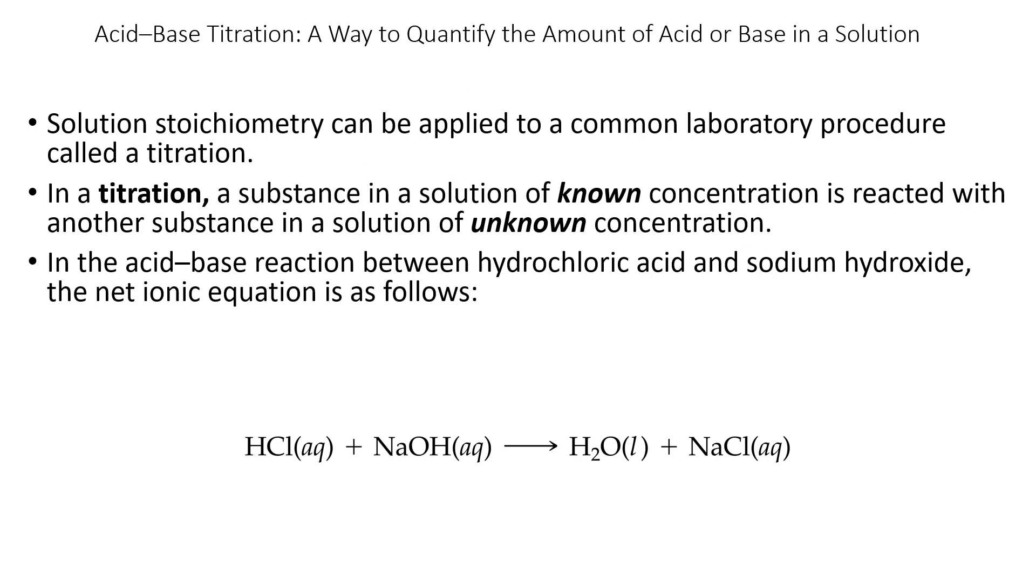One way to quantify the amount of acid or base in solution is to use a titration, and we did this right before the break. Solution stoichiometry can be applied using a titration. In a titration, a substance of known concentration is reacted with another substance of unknown concentration, so the goal of a titration is to discover what that concentration is. If we have HCl and NaOH, we get water from the OH- and the H+, and that leaves behind sodium chloride as the salt.